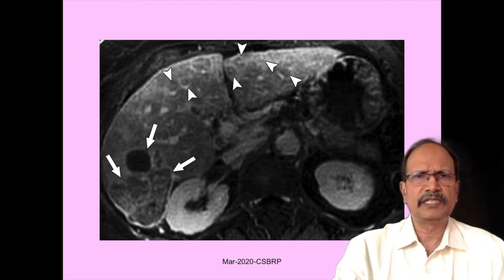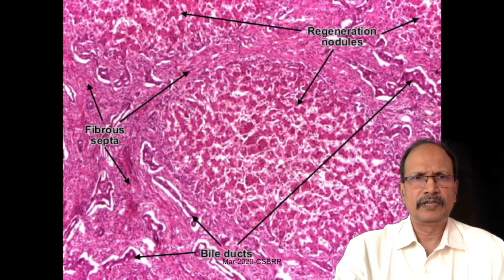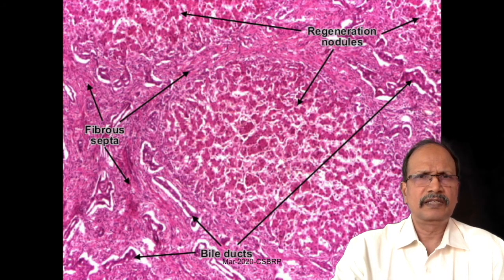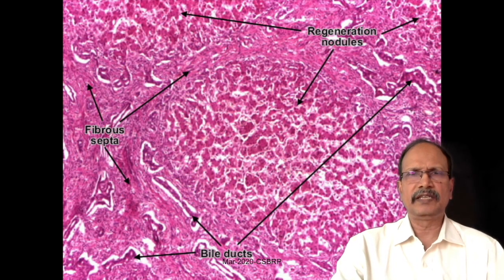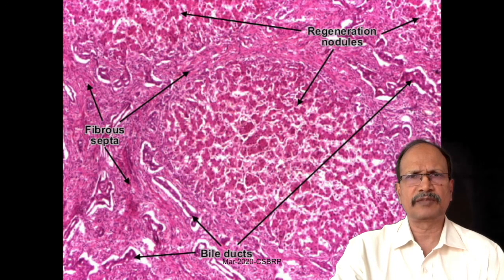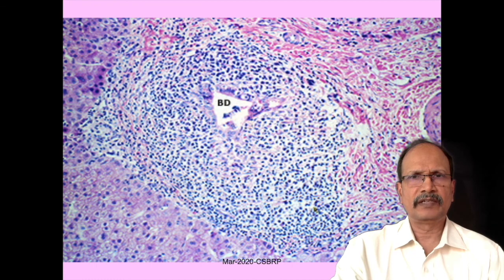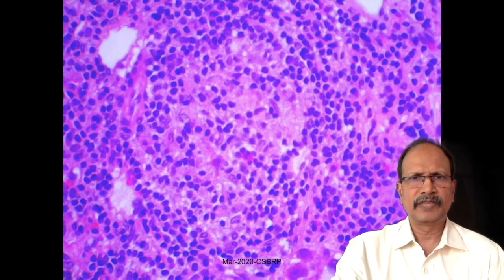Ultrasound or CT can show this fibrosis with central or targetoid areas, which is commonly seen in biliary cirrhosis. Look at this cirrhotic liver — you may see the fibrous band running around, and within the fibrous septae there are many biliary radicals. This is very typically seen in biliary cirrhosis, whereas many biliary radicals may not be seen in the classic variety of cirrhosis. In the autoimmune variety of primary biliary cirrhosis, you will see intense lymphocytic infiltration around the biliary radicals, which may be destructive, and sometimes granuloma formation can be appreciated around the biliary passages.